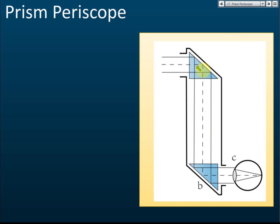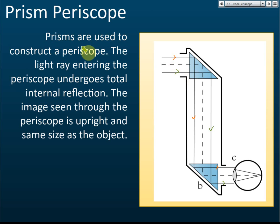Periscope: this is the diagram of a periscope. When a light ray goes in, it is reflected, and another light ray comes in and is also reflected. You can see the orange light is on top and the green light is below — meaning the image you see is upright. Prisms are used to construct a periscope. The light ray entering undergoes total internal reflection, and the image seen is upright and the same size as the object.